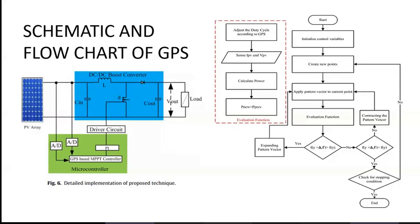Here the schematic and flowchart of the algorithm are shown. The schematic shows that our control variable is the duty cycle of the DC-to-DC boost converter. In the flowchart, first the open-circuit voltage and short-circuit current are measured by the microcontroller. After that, there is a range of points, from which it takes a finite number of points to evaluate.